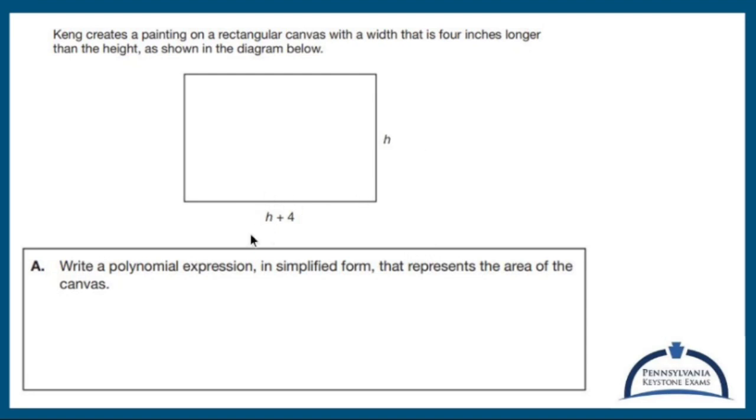Well, an area of a rectangle is going to be length times width. So in this case you're going to do h times h plus 4. It doesn't matter which one you do first. h times h is h squared, h times 4 is 4h. So the polynomial expression in simplified form that represents the area of the canvas is going to be h squared plus 4h.